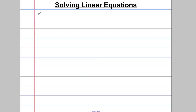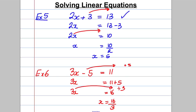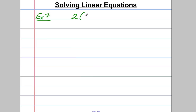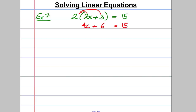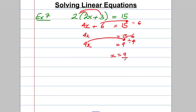The next thing that you can get is a bracket. Imagine we had 2 multiplied by (2X add 3) is equal to 15. First thing is expand your bracket. 2 multiplied by 2X is 4X, 2 multiplied by 3 is 6. So 4X plus 6 equals 15. We subtract 6 off both sides. 4X would be 15 subtract 6. 4X would therefore be 9. Then we divide both sides by 4. X would be 9 over 4. It's not a whole number — it's absolutely fine to leave your answer like that.